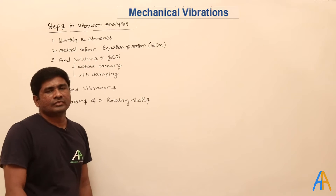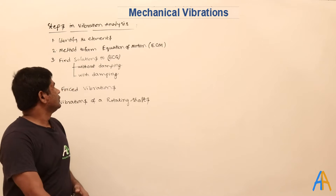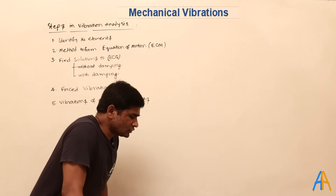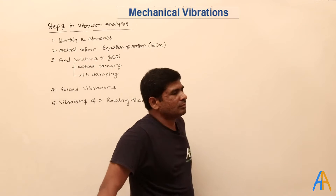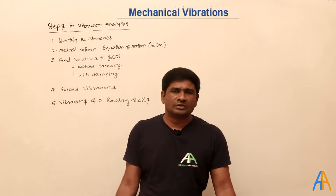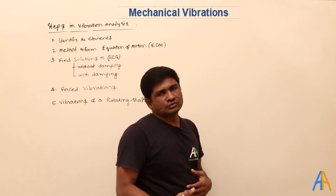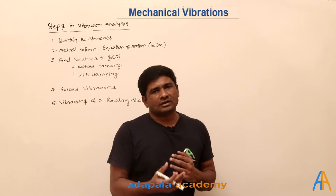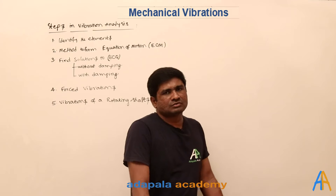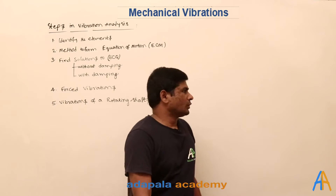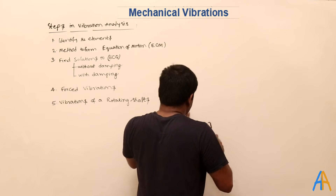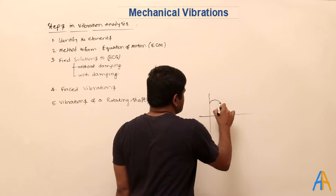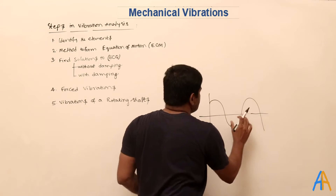After identifying the elements, you need to choose the appropriate method to form the equation of motion. The main objective of this chapter is to reduce the vibration produced by any system. To do that, you need to know how the system is vibrating — and you find that by knowing the curve. For example, here is a harmonic curve in terms of either cosine or sine.